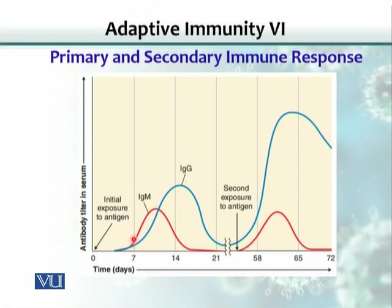there will be initially IgM production. Lymphocytes, when they are created in the bone marrow, always have an IgM molecule on their surface. So when a lymphocyte gets selected by the antigen, it induces the making of IgM antibody molecules and there would be an increase in the IgM response.